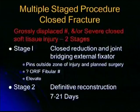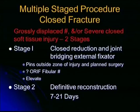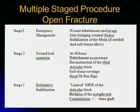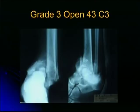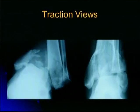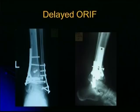A multiple-stage procedure is the routine, done in two stages. Stage 1 is closed reduction and joint-bridging external fixation — you may fix the fibula at stage 1 or leave it. Stage 2 is definitive reconstruction within 7 to 21 days. If it is an open fracture, you stage it in three ways: Stage 1 is emergency wound management and stabilization of the fibula if possible; Stage 2 at 48 hours is reconstruction of the tibial metaphyseal block; and Stage 3 is definitive stabilization fixing the tibia to the diaphysis. This is an example of a grade 3 open fracture treated by initial external fixation and then delayed ORIF using a cloverleaf plate and a one-third tubular plate for the fibula.